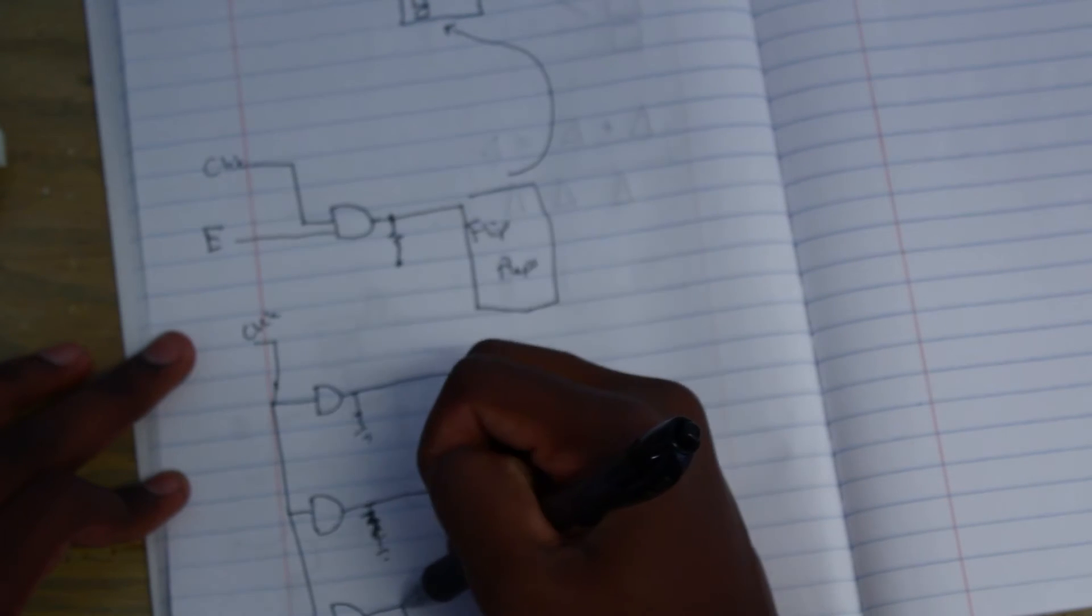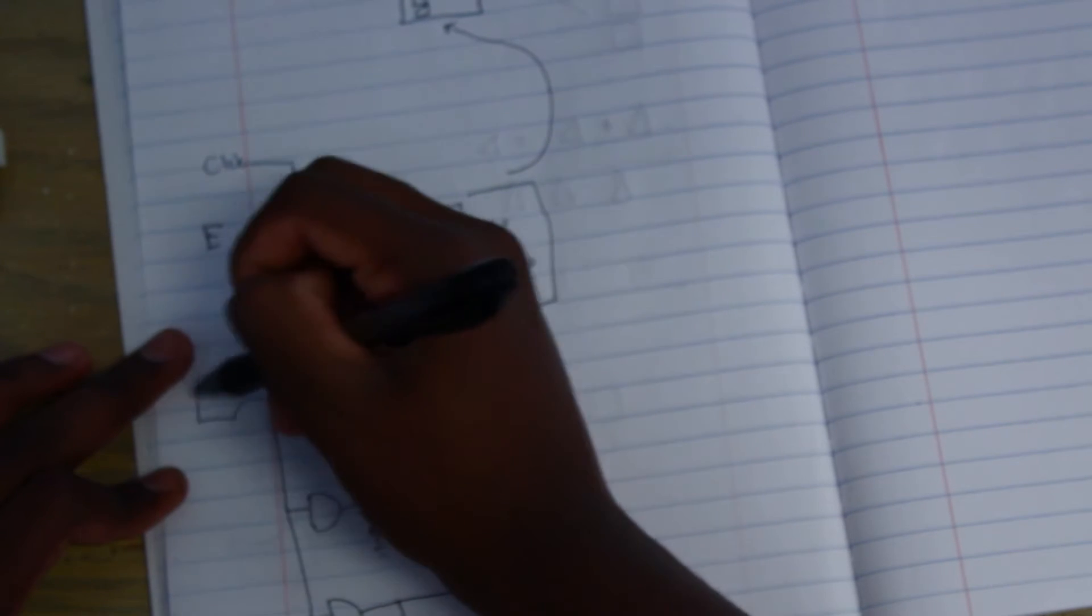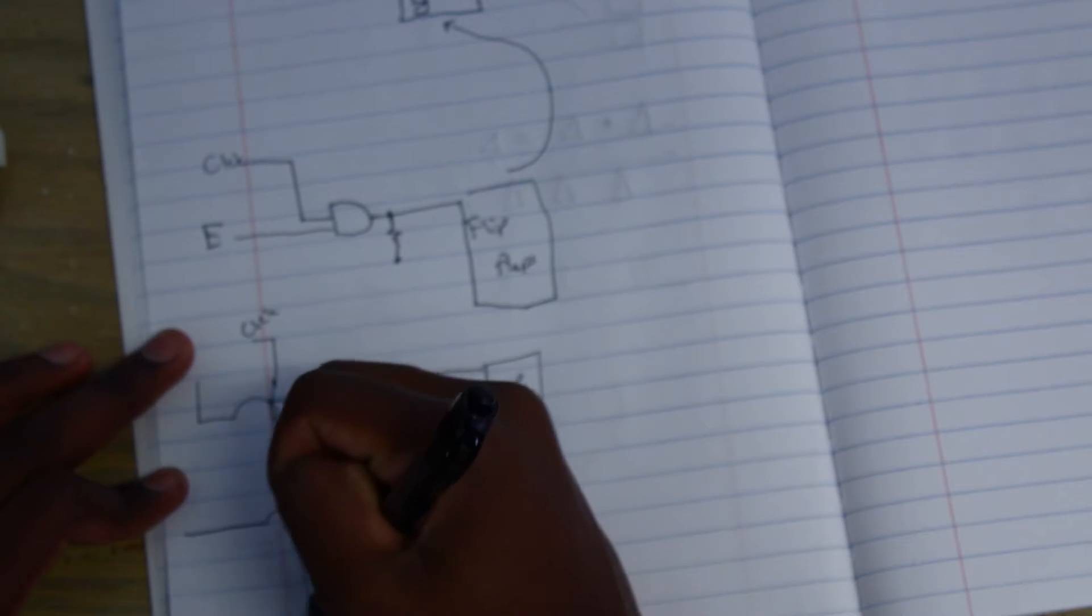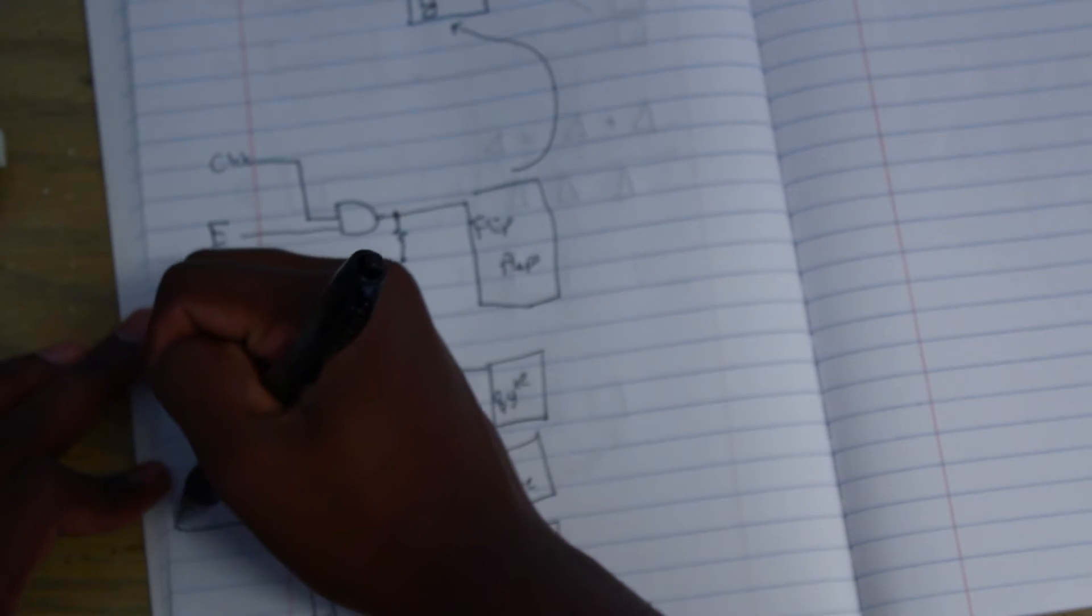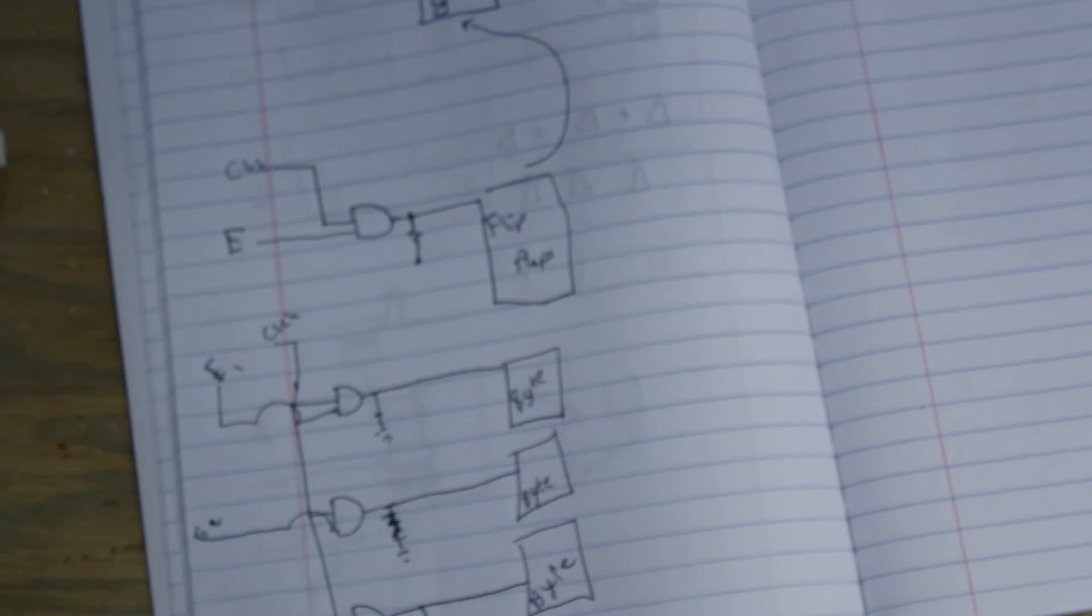And then they all go in as the clock. Okay. And then we have all of these connected to separate enable lines. So, E1, E2, and E3.